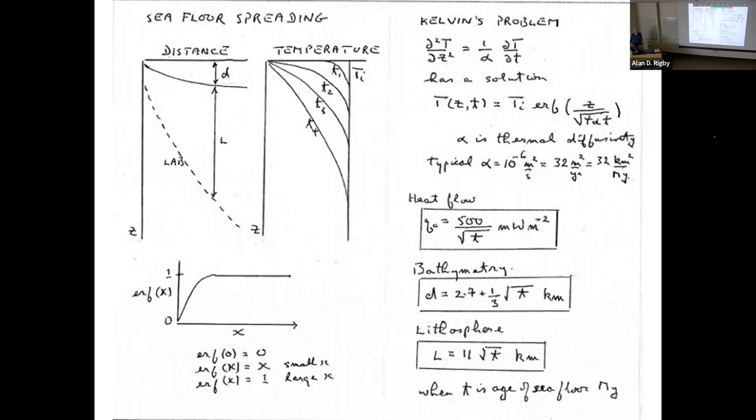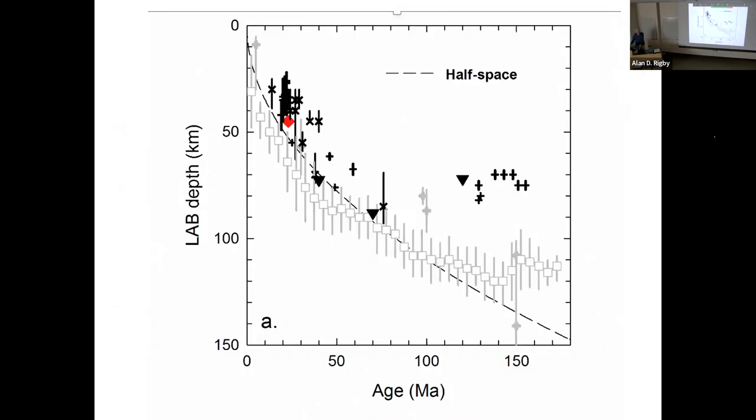But before we make the flags, we should ask how well this fits observations. I'll take you through observations in reverse order: lithosphere, bathymetry, and heat flow. Here's the test of lithosphere-asthenosphere boundary versus age of seafloor. The prediction is the dashed line. The data, largely from surface wave dispersion, is here. Except for old ocean basins, this is about as good as it gets in seismology. So it fits pretty well.